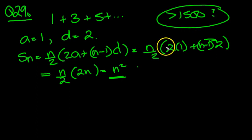So when is n squared greater than 1,500? So let's try a few values. 40 squared is 1,600, isn't it? So it's not going to be 40, but it's not going to be much less than that. Let's try 38.